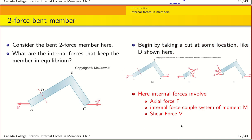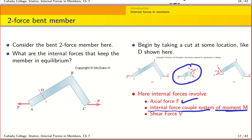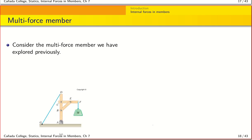So for the bent member, we need three things at the cut: an axial force F that prevents motion along the axial direction, a bending moment M to compensate for the couple formed, and a shear force V acting tangential to the surface and perpendicular to the axial force. These three internal quantities fully describe the internal state at the cut.